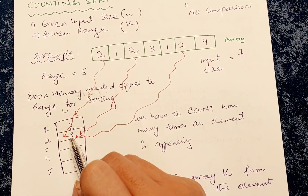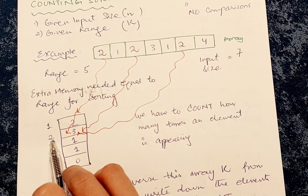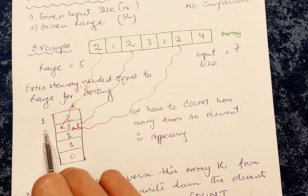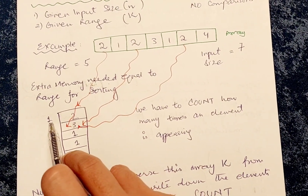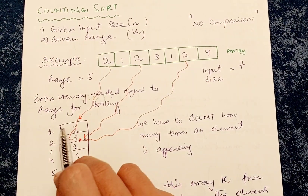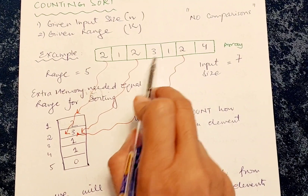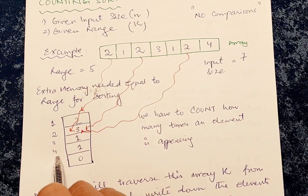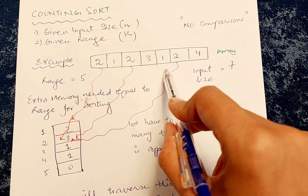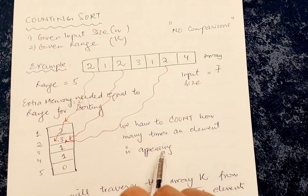I have written three against the number two, because two appears three times. I am counting the frequency, or count, of all these numbers. Don't forget one — one is appearing two times, so I have written two in front of one. For three, it appears only one time. Four also appears only one time. Five is not present in the given array, so the count of five is zero. Basically, we count how many times each element appears — this is the core idea of the counting array.